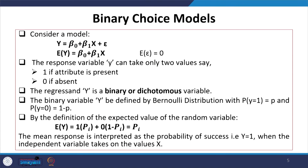In a binary choice model, the choice function is binary — that is, y, if linearized, equals beta-naught plus beta-1 x plus epsilon. The expected value of y is defined as beta-naught plus beta-1 x, with the assumption that the expected value of the error term equals zero. The response variable y can take only two values: 1 if the attribute is present, else 0. That is why the regression y is called a binary or dichotomous variable.